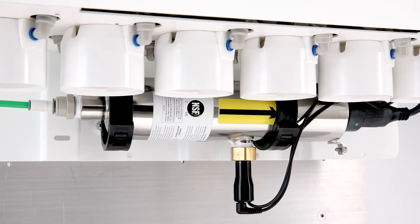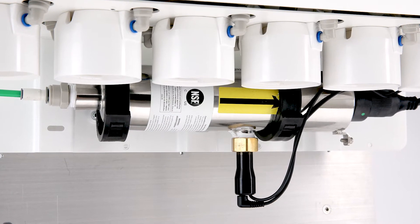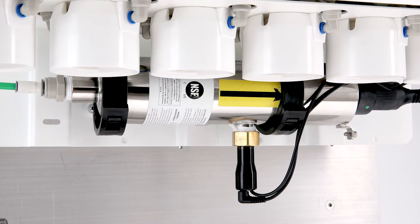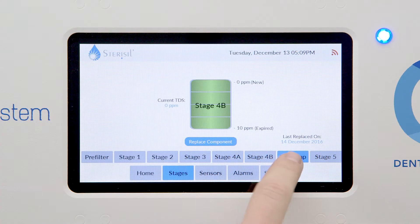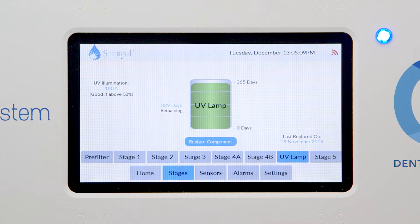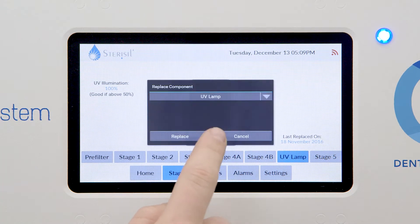The UV light's life is based on both light intensity and a 364 day count. To reset the light monitor, select the UV lamp tab on the bottom row, and then touch replace component.